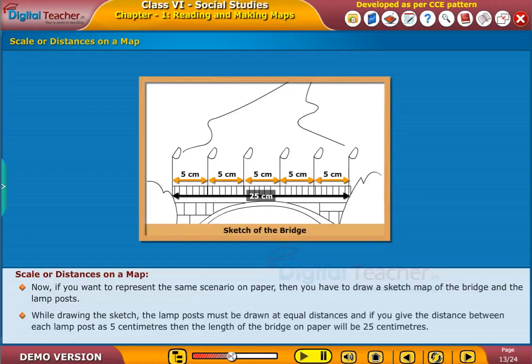While drawing the sketch, the lamp posts must be drawn at equal distances and if you give the distance between each lamp post as 5 centimeters, then the length of the bridge on paper will be 25 centimeters.